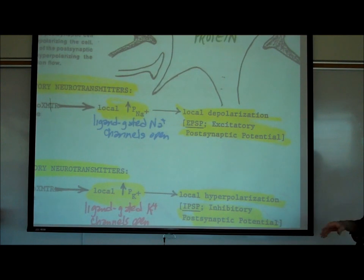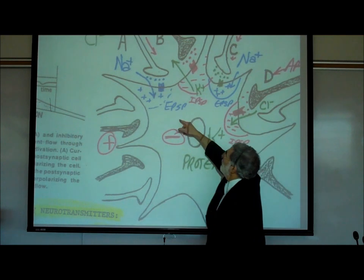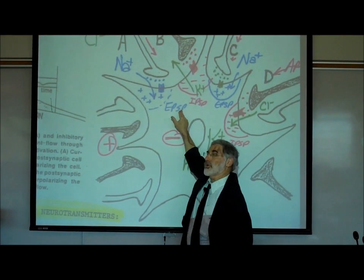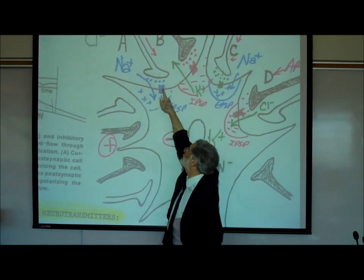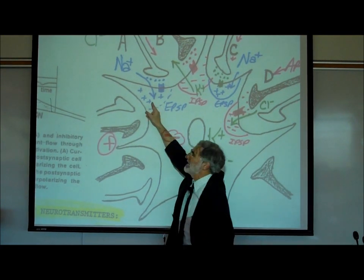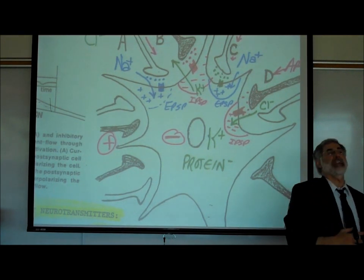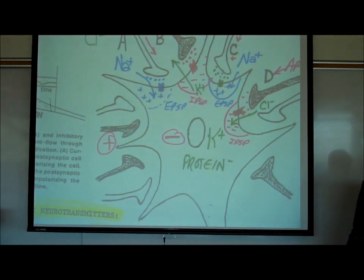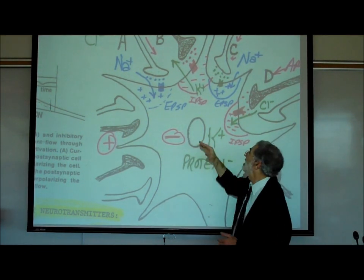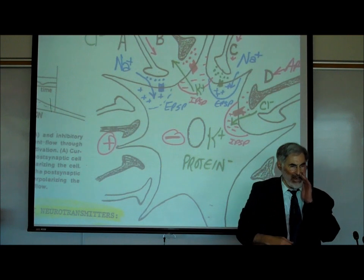Why is it called a postsynaptic potential? Because this voltage change is occurring in the postsynaptic cell. Any time the cell is depolarizing, you're exciting it — making it more likely to generate an action potential, pushing the boulder towards the edge of the cliff. This local depolarization is known as an EPSP.